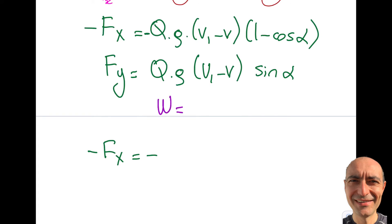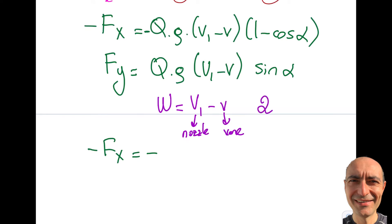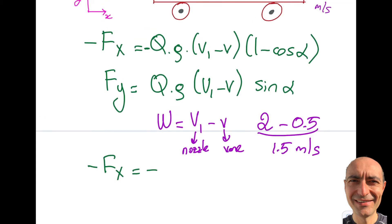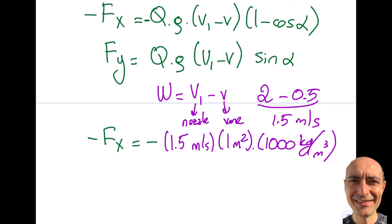W = V1 - V = 2 - 0.5 = 1.5 m/s. V1 is the nozzle velocity at 2 m/s, V is the vane velocity at 0.5 m/s. So Q = 1.5 m/s times A1 = 1 m². For water, ρ = 1000 kg/m³. Then I multiply by the same 1.5 (V1-V), times (1 - cos α), where α = 30 degrees.